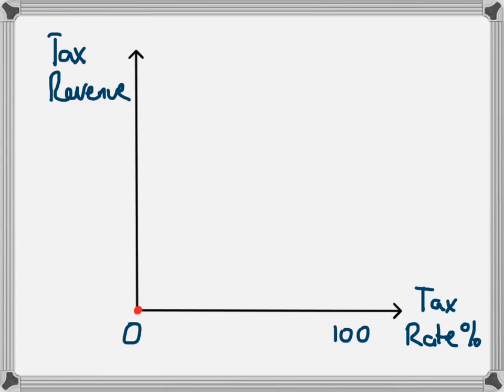If the tax rate was 100%, that means every dollar that people earned from working would go straight to the government, so people wouldn't bother working, and the tax revenue received by the government would also be zero.